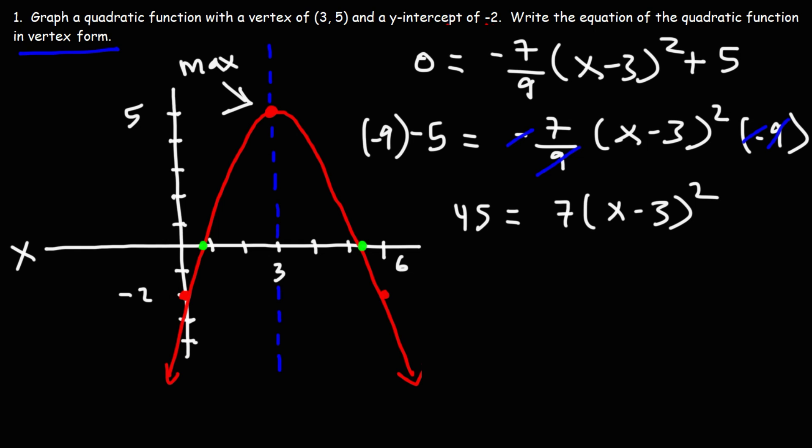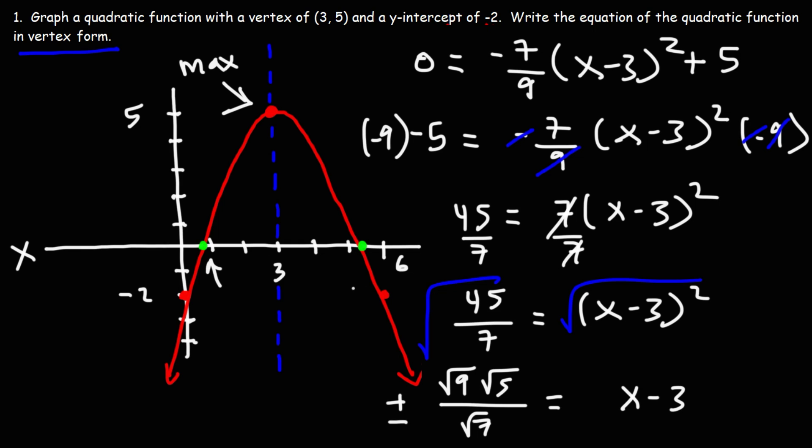Next, I'm going to divide both sides by 7. So I'm going to have 45/7 = (x - 3)². The next step is to take the square root of both sides. Now 45, we can break that into 9 and 5. Can't really do much with the 7 right now. And on the right side, we're going to have x - 3. Now we're going to have two answers, plus or minus, because we do have two x-intercepts.